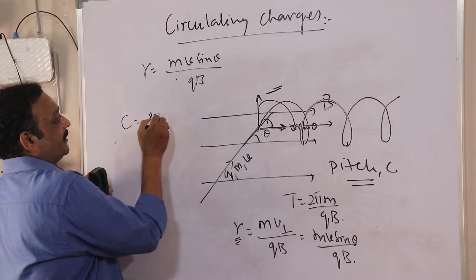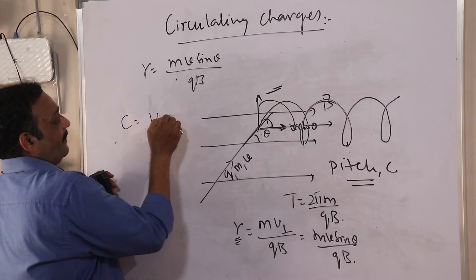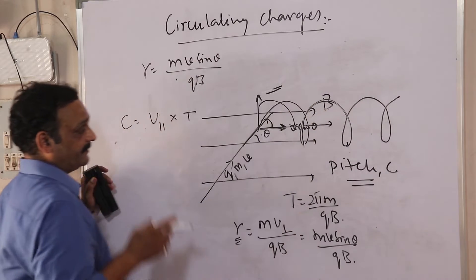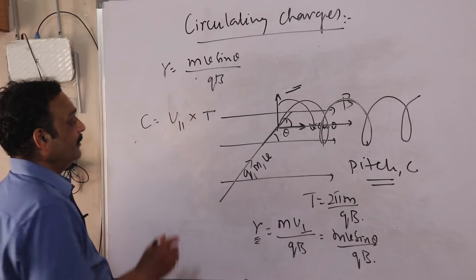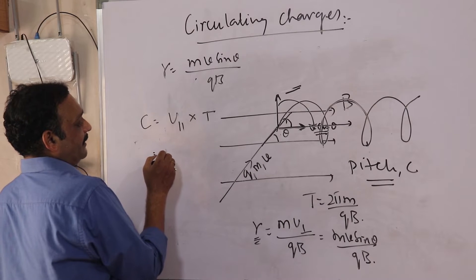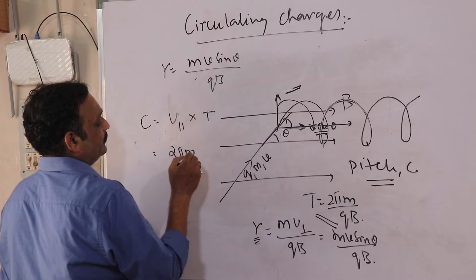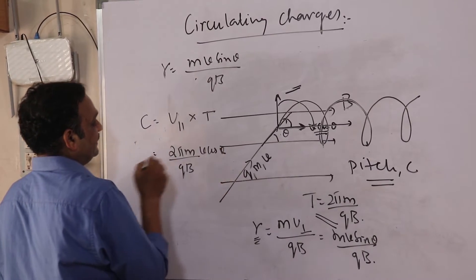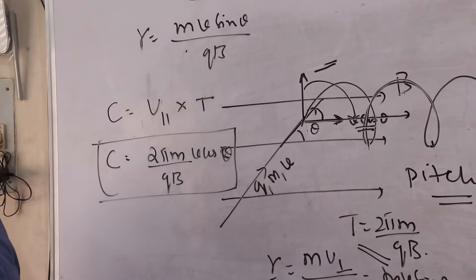The pitch c of the helix equals the parallel component of velocity multiplied by the time period: c = v cosθ × T. Since T = 2πm/qB, the pitch c = (2πm/qB) × v cosθ. This is the expression for the pitch of the helix.